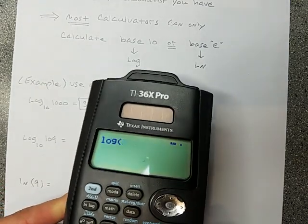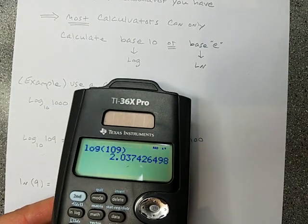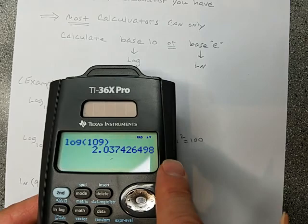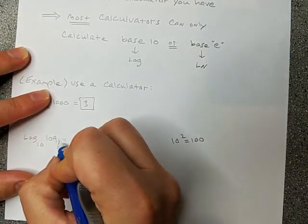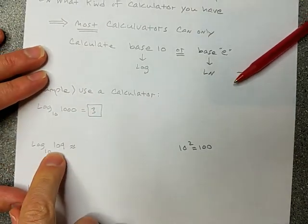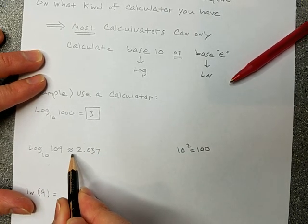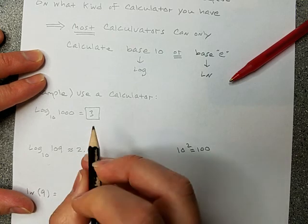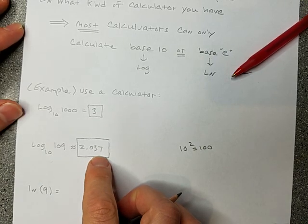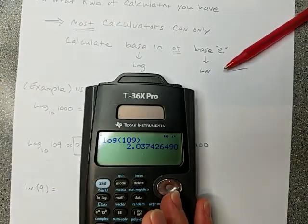Let's see — log base 10 of 109. The calculator gives 2.037. This is an irrational number whose decimal goes on forever. So we can't write an equals sign; we use the approximation symbol. Log base 10 of 109 is approximately 2.037 after rounding. Pay attention to instructions about how many decimal places to round to. My prediction of a decimal just slightly bigger than 2 was right.